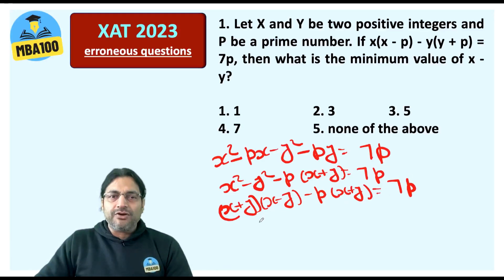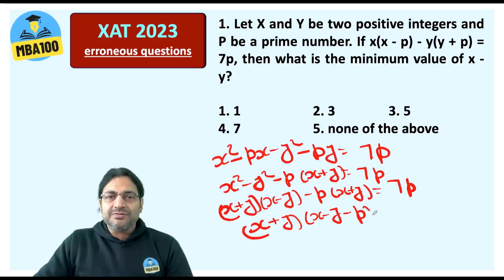So take X + Y common. X + Y and this becomes X - Y - P, and this is equal to 7P.